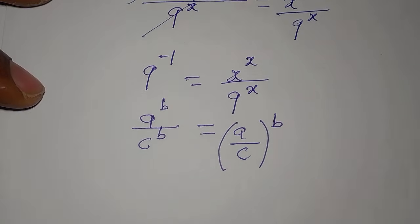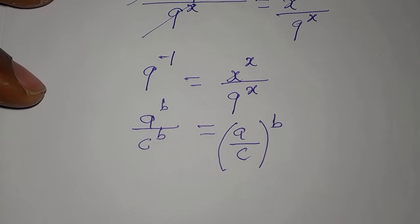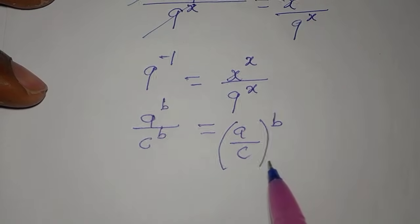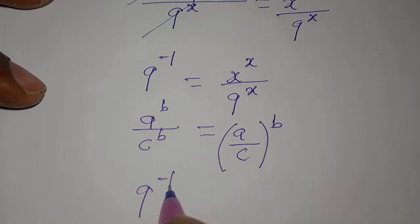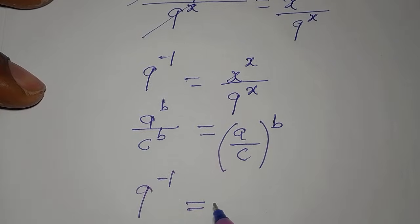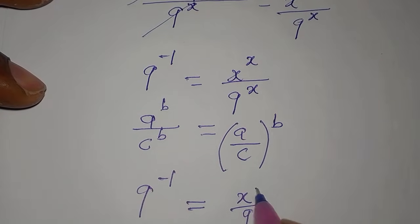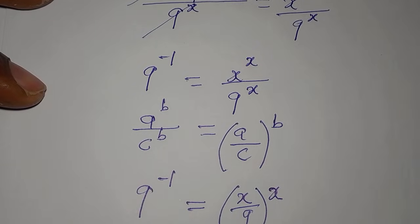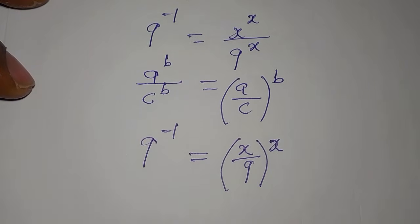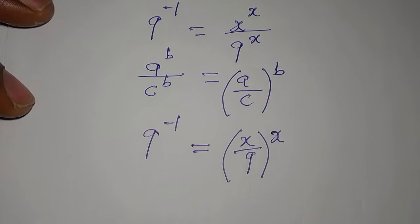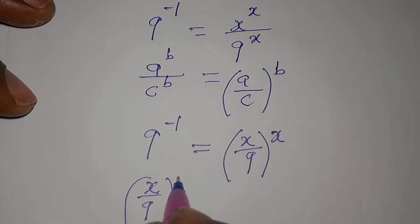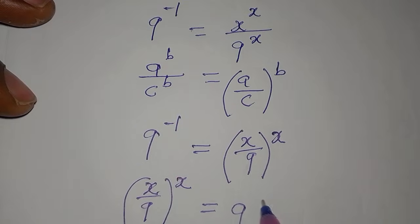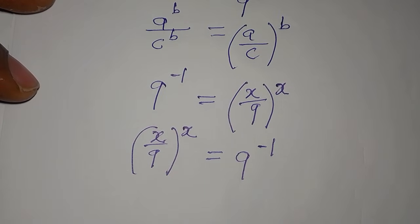Applying that law, we write: 9 to the power of negative 1 equals the quantity x over 9, all raised to the power of x. Since we prefer the unknown on the left-hand side, we rewrite this as: x over 9, to the power of x, equals 9 to the power of negative 1.